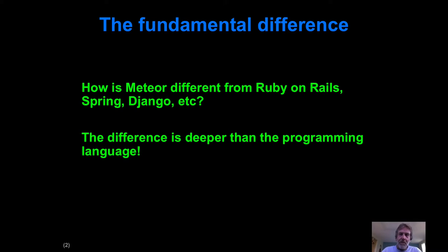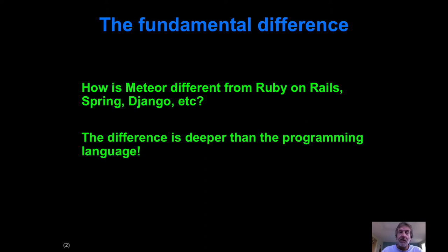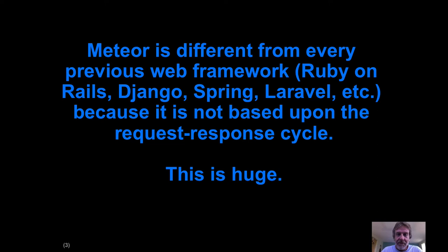You might be tempted to say that Ruby on Rails is built with Ruby, Spring is built with Java, Django is built with Python, and Meteor is built with JavaScript — so the major difference is just the programming language. But in fact that's not true. With Meteor, the difference is far more than just the fact that we're using JavaScript. Meteor is fundamentally different at an architectural level from all those previous web frameworks.